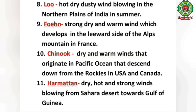Loo is a hot, dry, dusty wind blowing in the northern plains of India in summer. Fohan is a strong, dry, and warm wind which develops on the leeward side of the Alps mountain in France. Chinook refers to dry and warm winds that originate in the Pacific Ocean and descend down from the Rockies in USA and Canada; it is also called the Snow Eater. Harmatan is a dry, hot, strong wind that blows from the Sahara Desert towards the Gulf of Guinea.